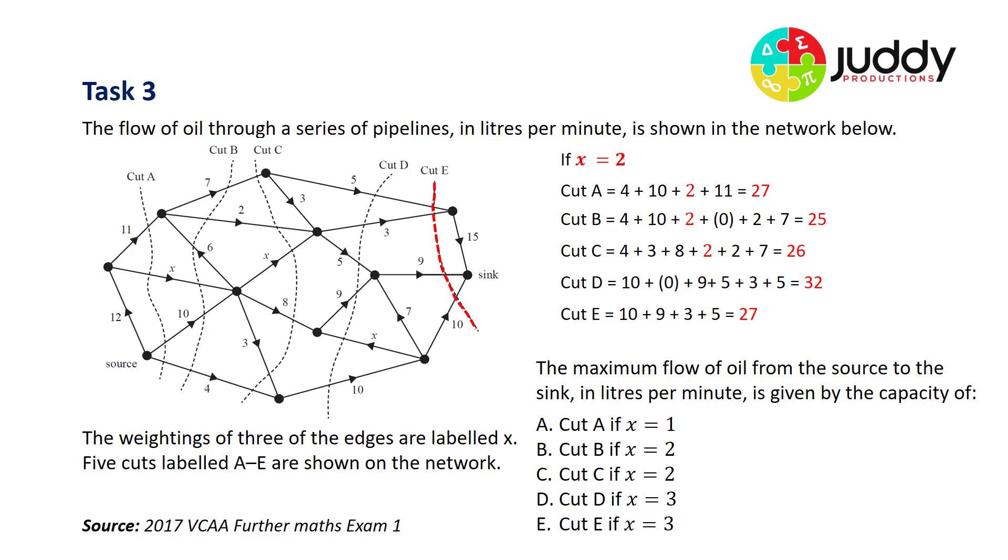Let's have a look when X equals 2. Cut A has a value of 27, cut B 25, cut C 26, cut D 32 and cut E 27. So again, the minimum capacity or maximum flow is through cut B when X equals 2. And that's what option B says. It says cut B will give us the maximum flow if X equals 2. So that's our correct answer.